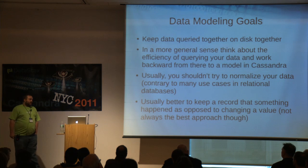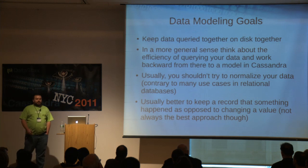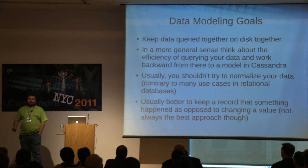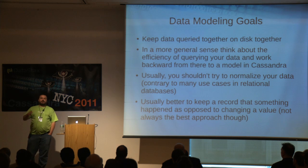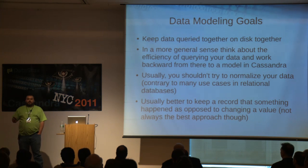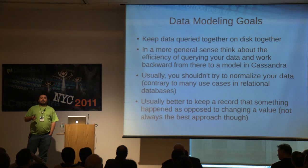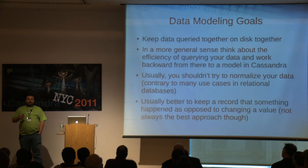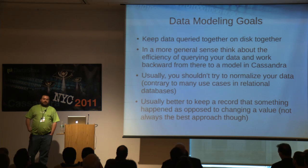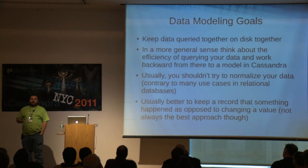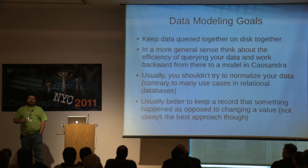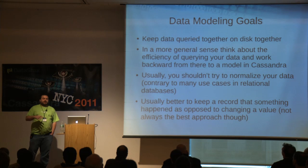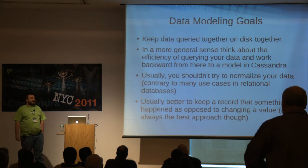As a general rule, it's usually better to keep a record of something that happened as opposed to trying to change a counter. If you have multiple states in a workflow — a document gets submitted, then signed, then approved — it's probably better to have a row with a column for submitted, a different column for approved, and another for signed, rather than a single field you change. In a relational database that's not as important because atomic transactions on one node are easy. In distributed systems, that's not quite as easy.